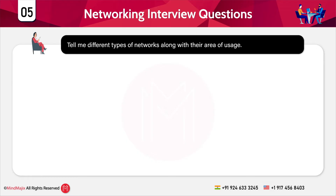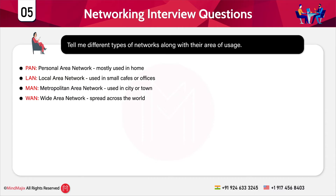The next question is: tell me the different types of networks along with their area of usage. The various types of networks are PAN, LAN, MAN, and WAN. PAN is Personal Area Network, used in homes — for example, your home Wi-Fi. LAN is Local Area Network, generally used in small cafes or offices. MAN is Metropolitan Area Network, used in a particular city or town. WAN is Wide Area Network, spread across the world.